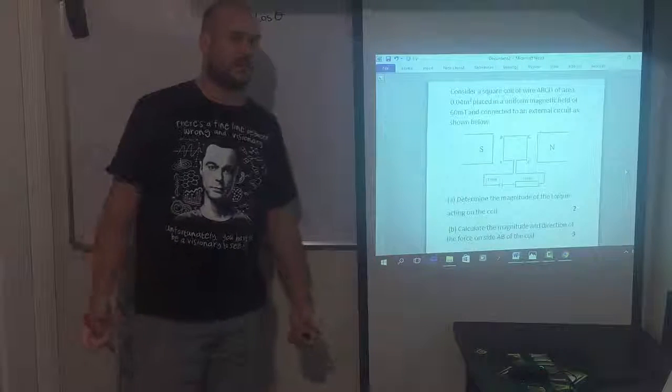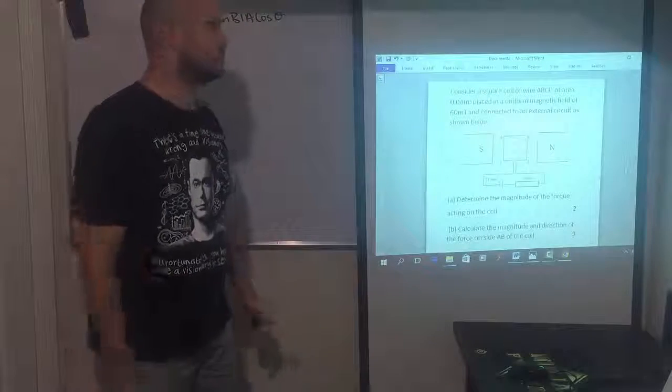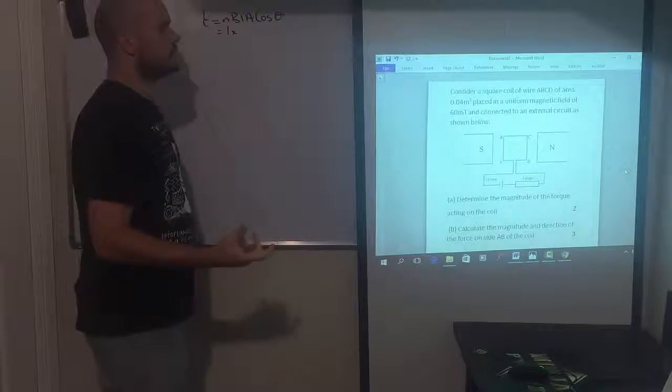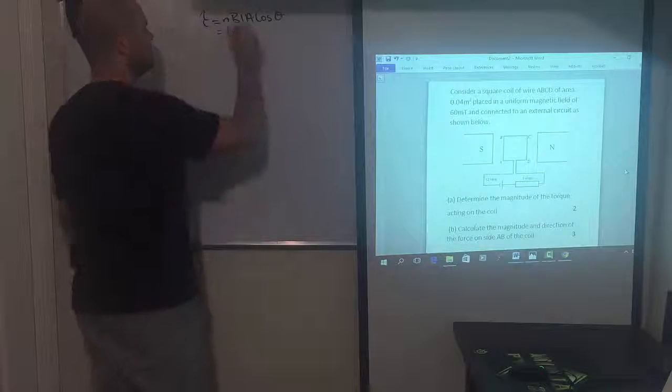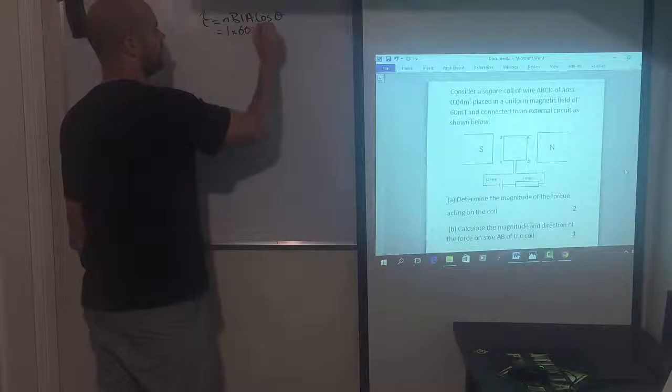We're not given any information about the number of turns, so we'll assume the number of turns is one. So you've got one turn times the external field strength of 60 millitesla, so 60 times 10 to the minus 3.